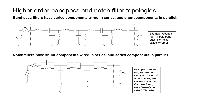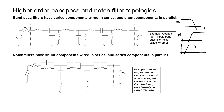A 14-pole bandpass filter is often called a 7th-order filter rather than 14th-order, because there are two sides to the bandpass filter. A 7th-order low-pass filter would have 140 decibels per decade roll-off (7 × 20 = 140). A 7th-order bandpass filter requires 14 poles because a bandpass filter is like a low-pass filter combined with a high-pass filter — so there's a factor of two difference between the order and the number of poles.